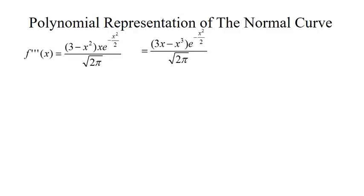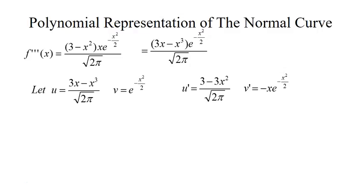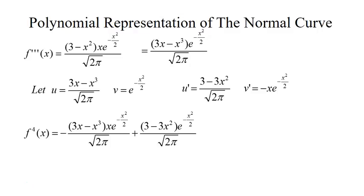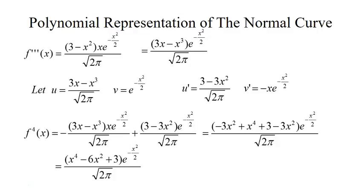For the next derivative, we distribute the x first, giving us 3x minus x cubed times e to the negative x squared over 2, over the square root of 2 pi. We break it up, take derivatives of u and v, plug into the product rule, and factor out the common factors. We're left with x to the 4th minus 6x squared plus 3, times e to the negative x squared over 2, all over the square root of 2 pi. Evaluating at 0 we get 3 over the square root of 2 pi.